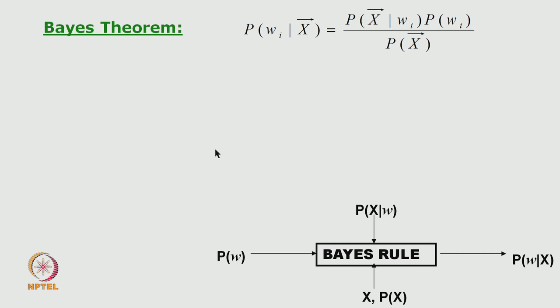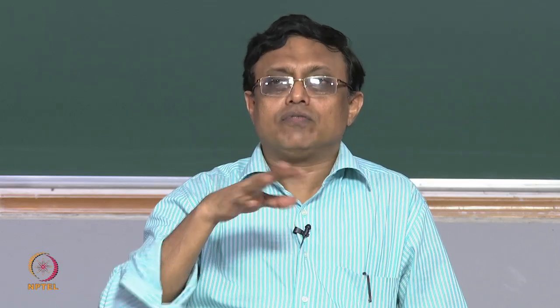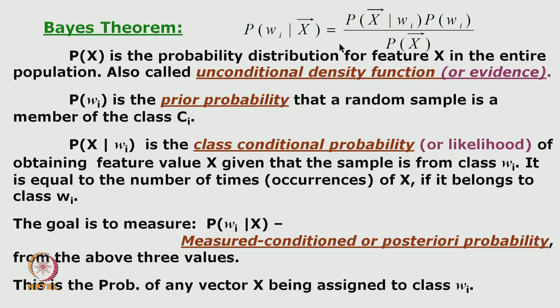Different books use these terms in different ways. I will use the most common terms to describe the components of the Bayes theorem used for class assignment. The denominator term p(x) is called the unconditional density function, or evidence — some books casually call it evidence — but we will stick to the term unconditional density function or unconditional probability.